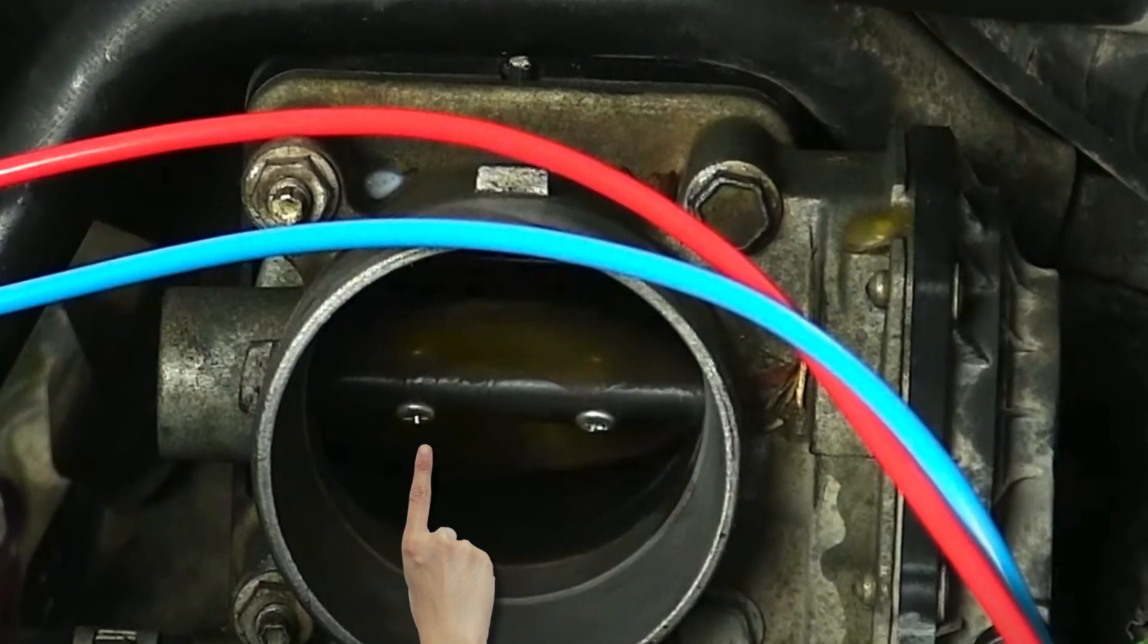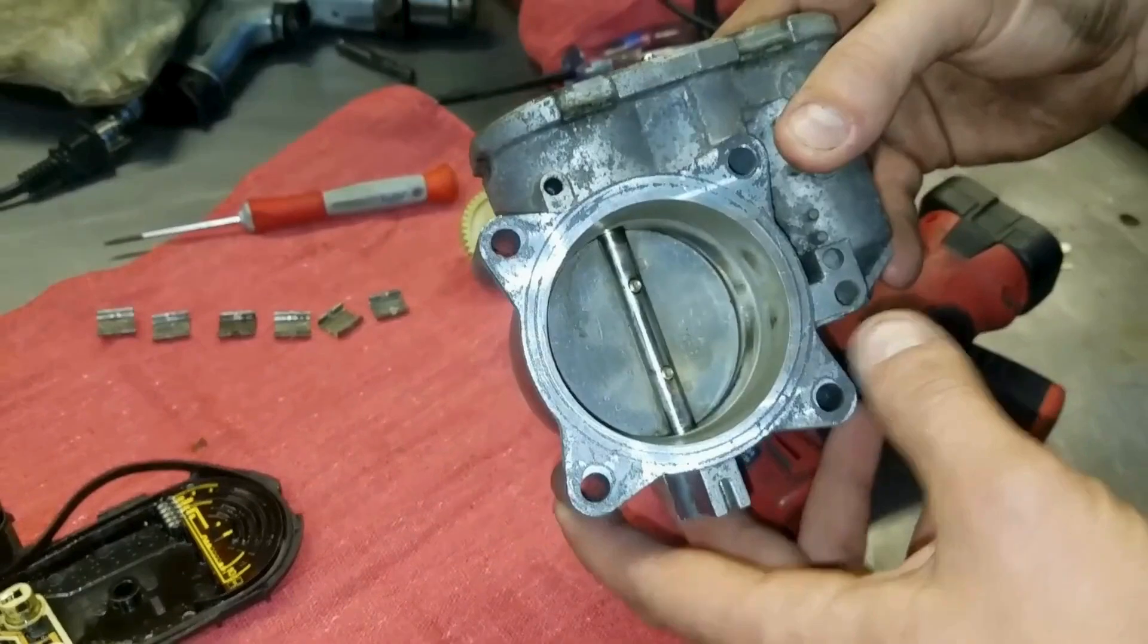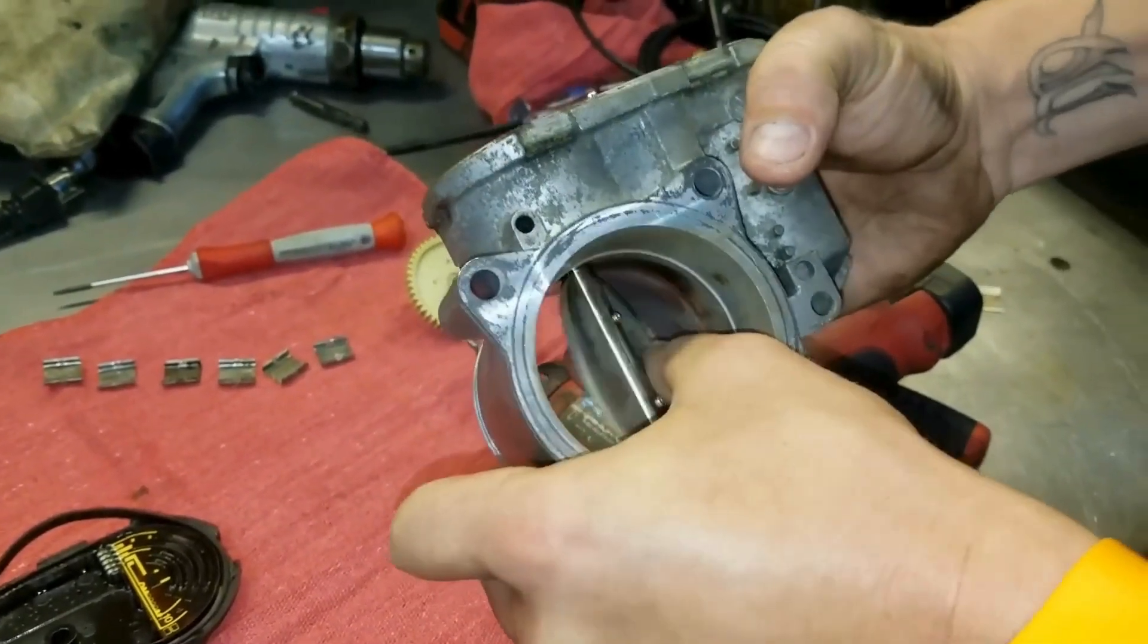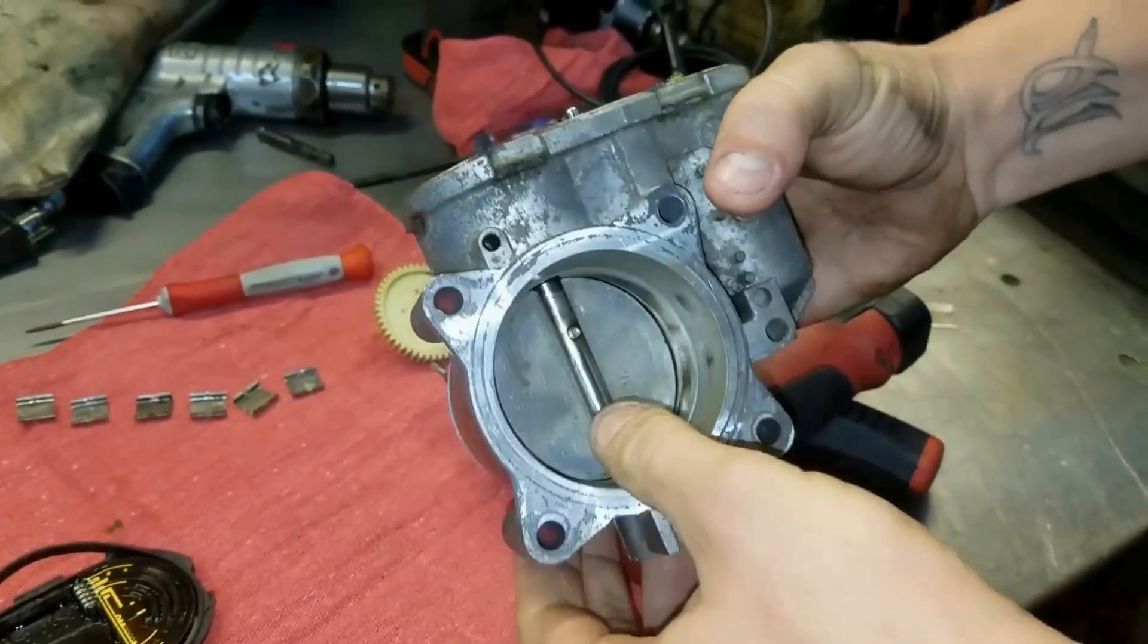Next, try to move the throttle valve plate with a finger. If the valve plate binding are not moving smoothly under normal spring pressure, it means the throttle body is bad.